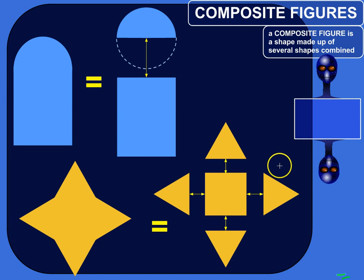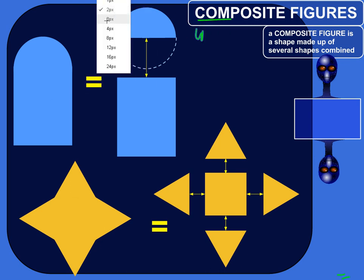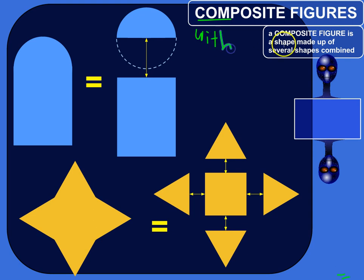And I've got some examples here, but first let's just break apart this word. Com means with, and pos means put. So these are shapes that are put with other shapes to make one final shape.